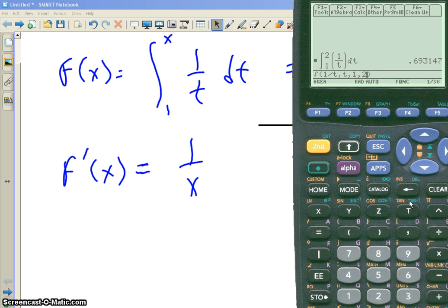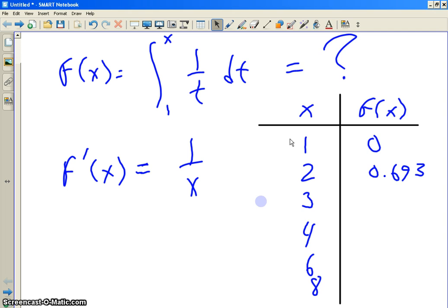Okay, let's run it for three. What do we get for three? We get 1.099. So 1.099. You're going to see a pattern here.